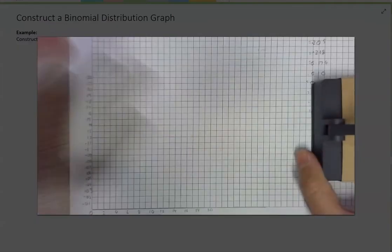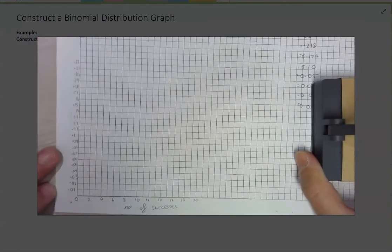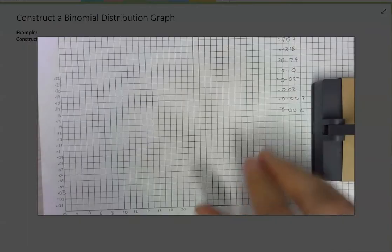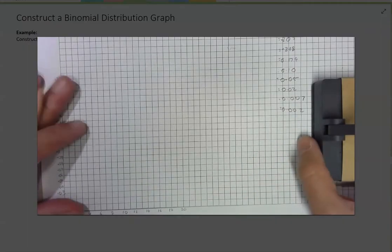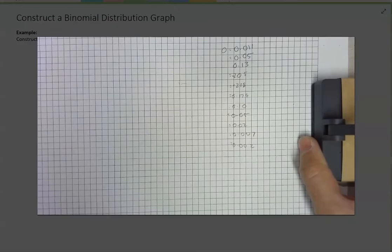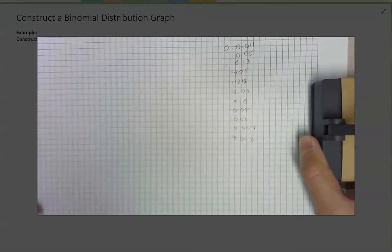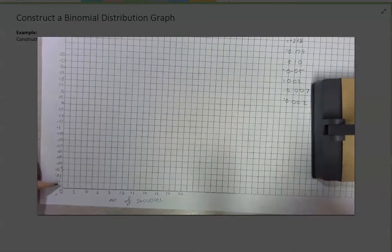Okay, and I'm going to get a graph that looks a little bit like that. Okay, now that I've got that I just need to start putting my points on. And so my first point was 0.01, which is here.